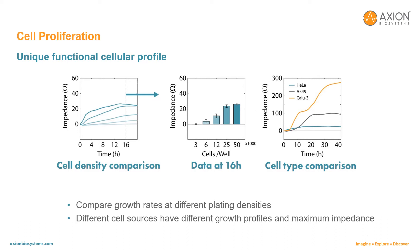In this example, HeLa cells were plated at five different densities and the impedance was continuously monitored using the Maestro Z. The highest density of HeLa cells showed the fastest growth rate during adhesion and growth, reaching confluence near 12 hours. By 16 hours, both the two highest densities had reached 100% confluency as exhibited by the plateau in impedance, while the lower cell densities continued to grow and spread. This middle figure shows significantly higher impedance at 16 hours for 25,000 and 50,000 cells per well compared to lower densities.